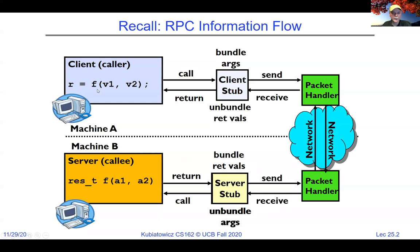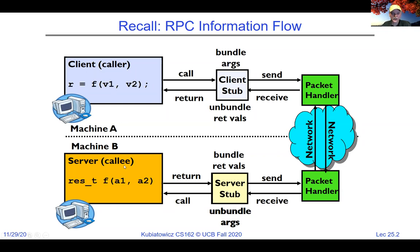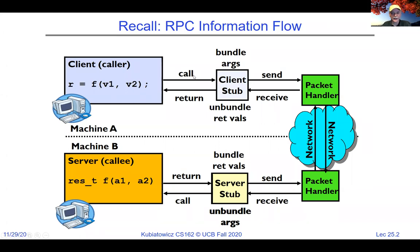Some key ideas we discussed: the arguments to these procedures have to be packaged up by the client stub in a network-independent way, serialized as a set of bytes, then sent across the network where they're unpacked. The server stub calls the server function with the deserialized arguments, then the return value gets serialized again, sent across the network, and returned to the client as a return from a function call.